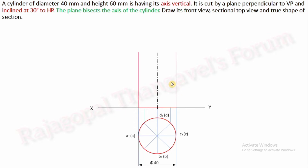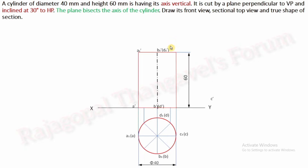The axis height is 60 mm. You can draw an axis and complete a rectangle in the front view. As an observer standing here, a, b, c will be visible, but d1 and d are invisible from here — that's why d dash and d1 dash are marked in brackets. This is the simple position of a solid cylinder.